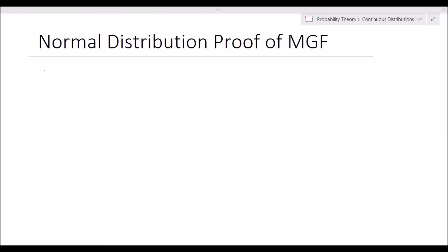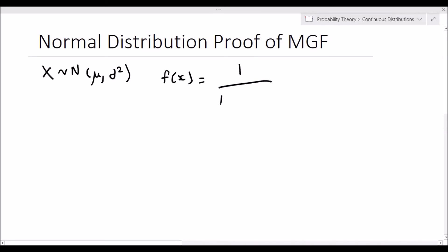So a brief reminder: if a random variable X is distributed as normal with a mean mu and a variance of sigma squared, then f of x, which is the PDF of x, is given by 1 over square root of 2 pi sigma, times e to the negative x minus mu squared over 2 sigma squared.